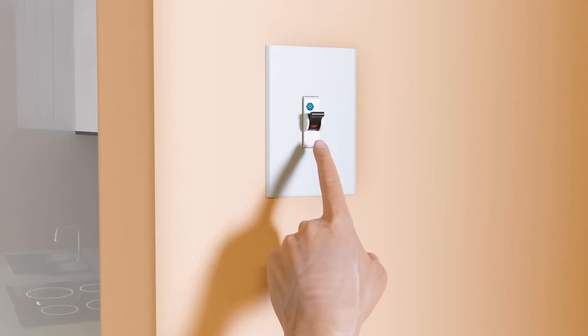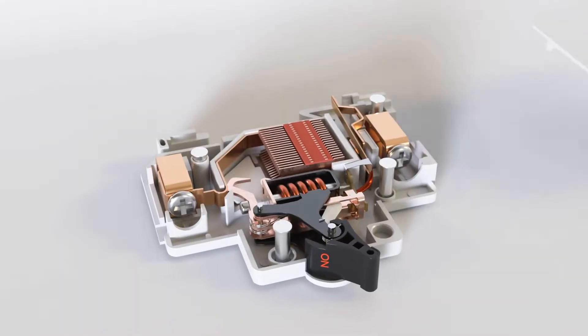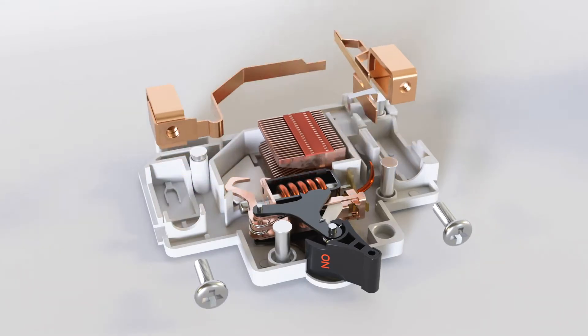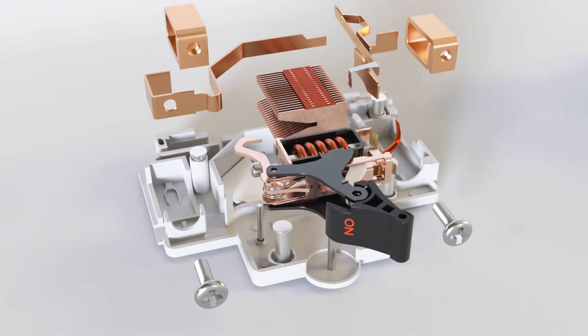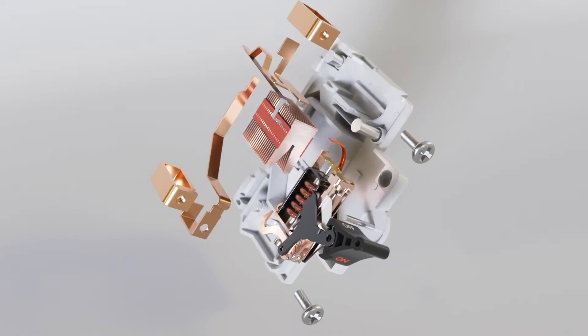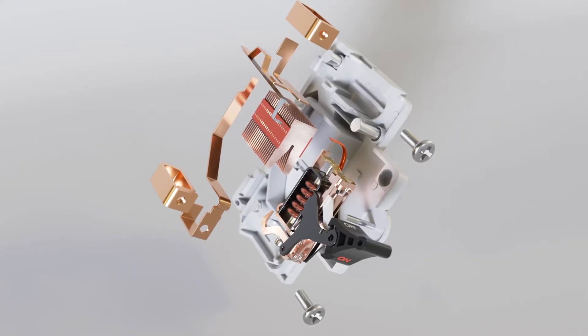Unlike a fuse, we don't need to replace anything. Let's explore how a miniature circuit breaker detects short circuit and overloads by understanding its internal working. The internal structure of a MCB can be divided into four main sections.